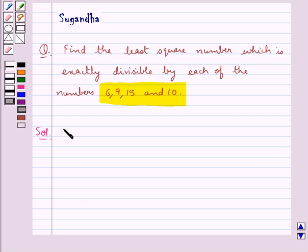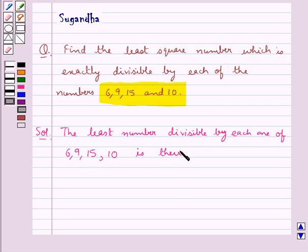Now the least number divisible by each one of the numbers 6, 9, 15, and 10 is their LCM.